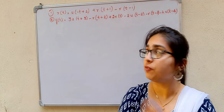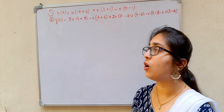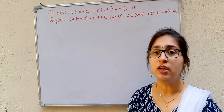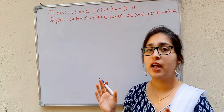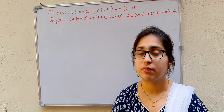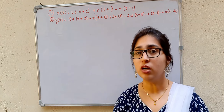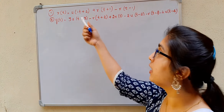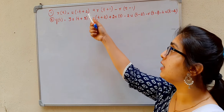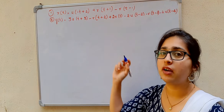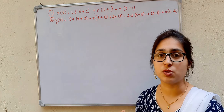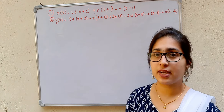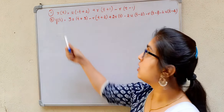In my previous videos, I had solved some problems like how to sketch a signal — for example, when there was addition of step functions or ramp functions. But here you can see there is a step function and ramp functions combined. In this case, how are we going to sketch this signal?